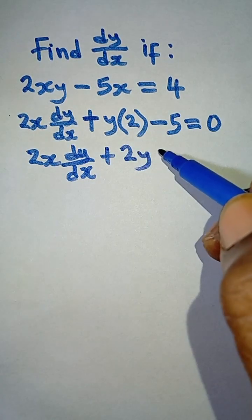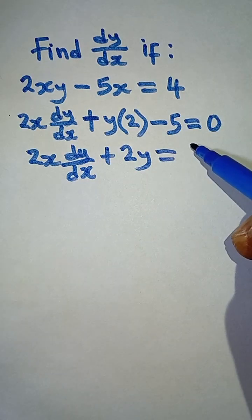That is 2 multiplied by y is 2y. Is equal to when this negative 5 goes to that side, it becomes positive 5.